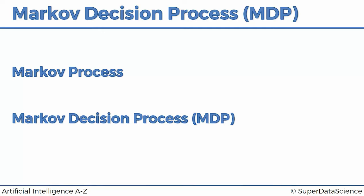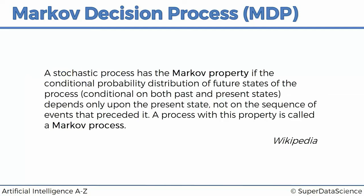So let's have a look at these. I know I don't like to put lots of definitions on slides, but in this case it is necessary. A stochastic process has a Markov property if the conditional probability distribution of future states of the process, conditional on both past and present states, depends only upon the present state, not on the sequence of events that preceded it. A process with this property is called a Markov process. It's a complex definition and it kind of feels like it contradicts itself — it says conditional on both past and present states, but then it only depends upon the present state.